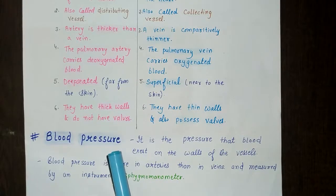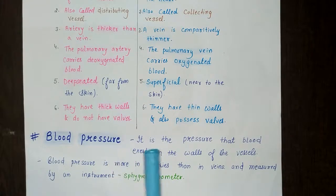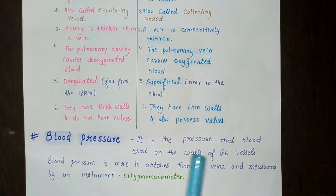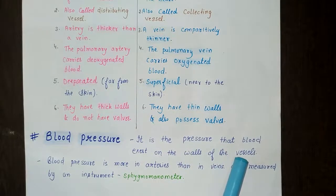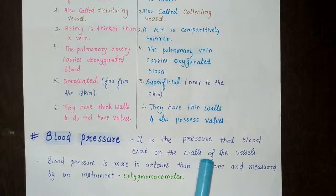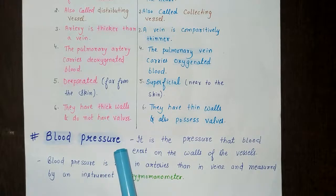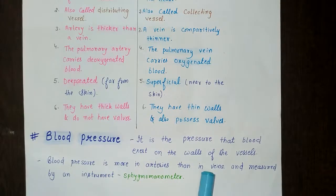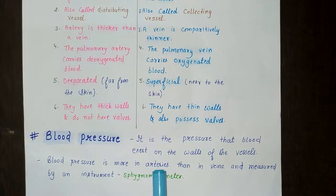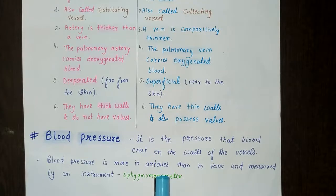The next term is blood pressure. Blood pressure is the pressure that blood exerts on the wall of blood vessels. Blood pressure is higher in arteries than in veins, because when the heart pumps blood through the arteries, the arteries receive more pressure.